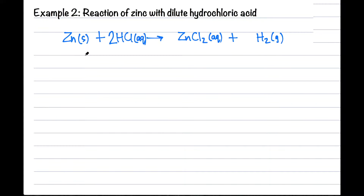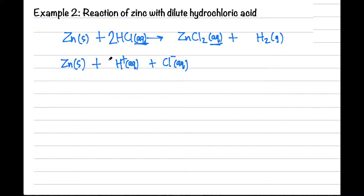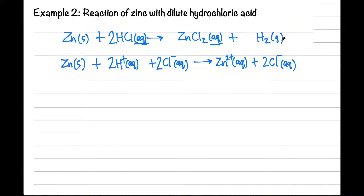Now let's look for items with aqueous and split them up into their ions. We keep zinc because it's solid. For hydrochloric acid there is H+ and Cl⁻. Note that because of the coefficient 2, we have to apply 2 to both ions. For the product, zinc chloride is aqueous so we split it: zinc 2+ and two chloride ions. Since hydrogen gas is not aqueous we keep it as is.